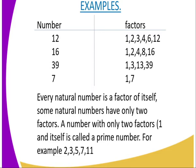Every natural number is a factor of itself. Some natural numbers have only two factors. A number with only two factors, that is 1 and the number itself, is called a prime number as we have seen.